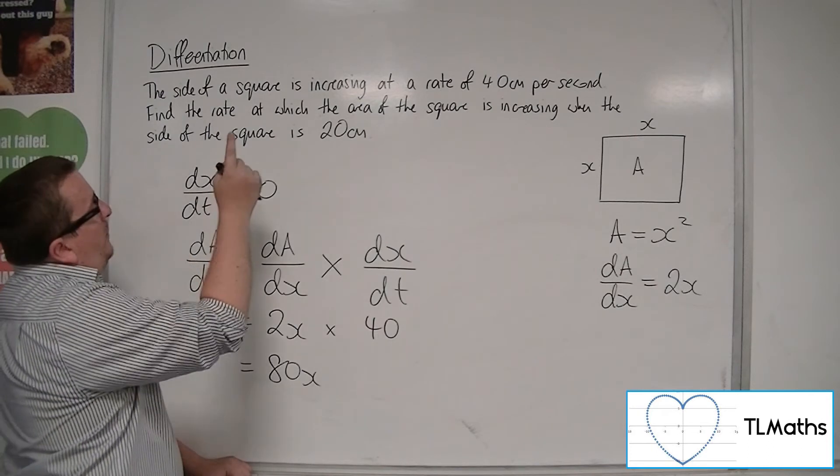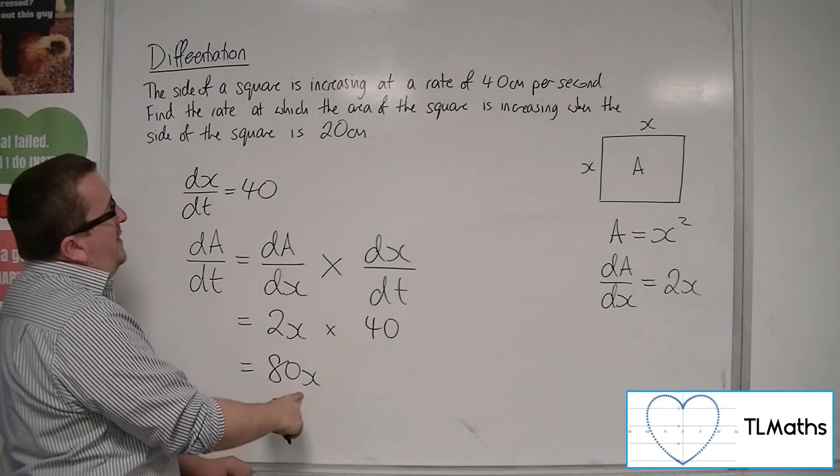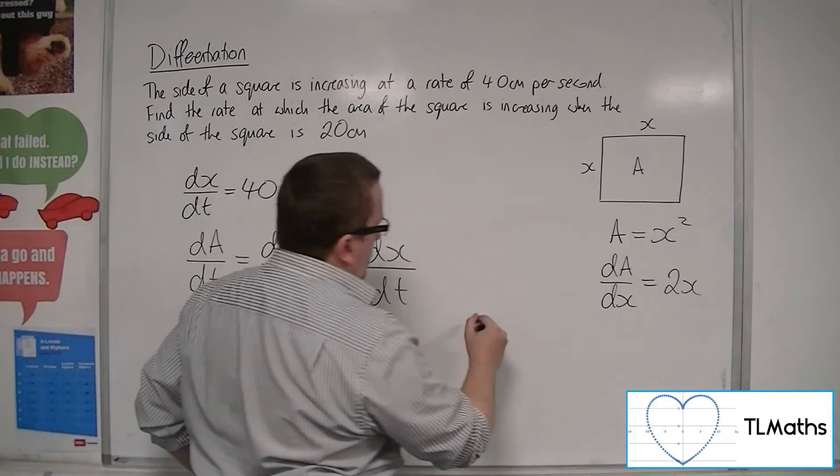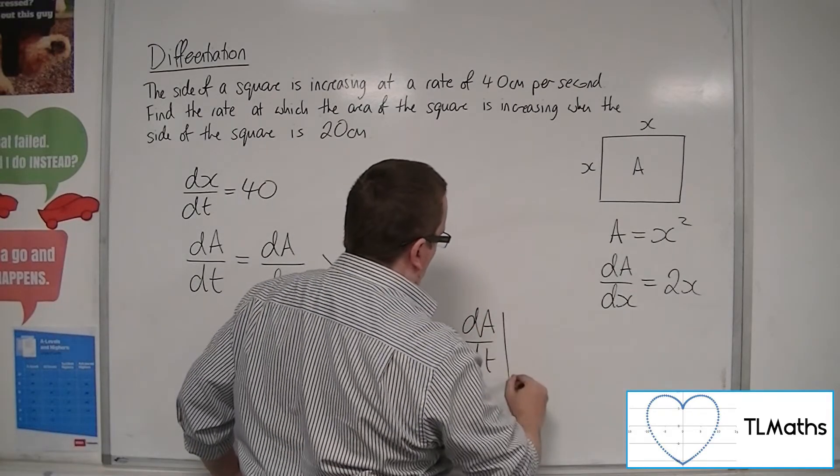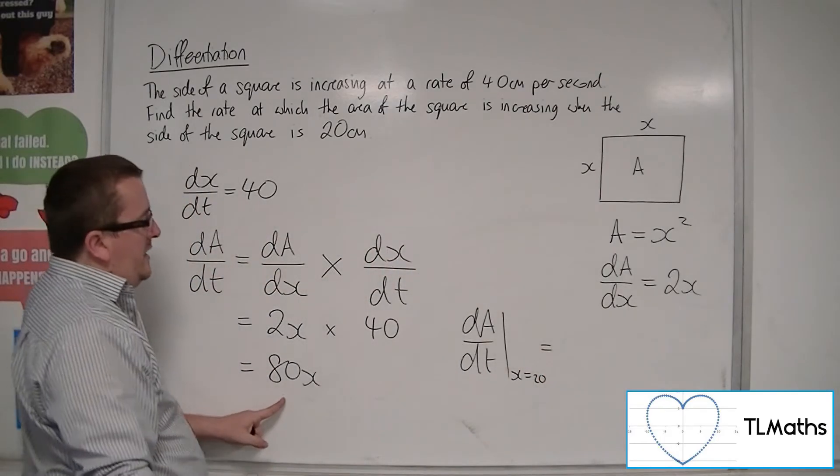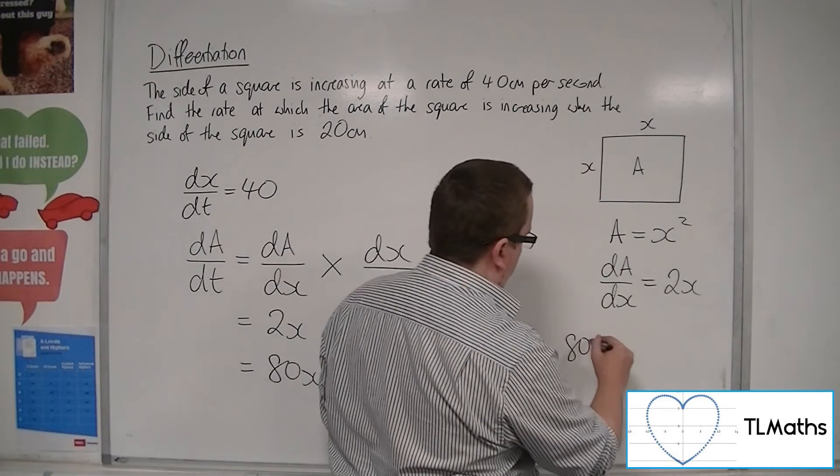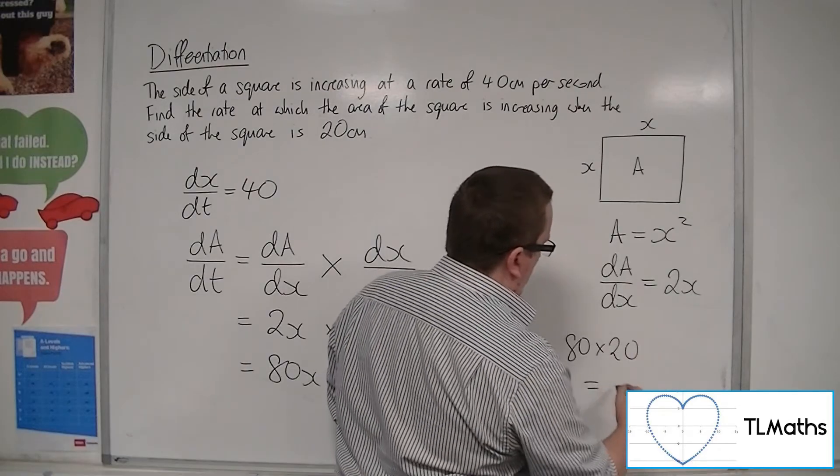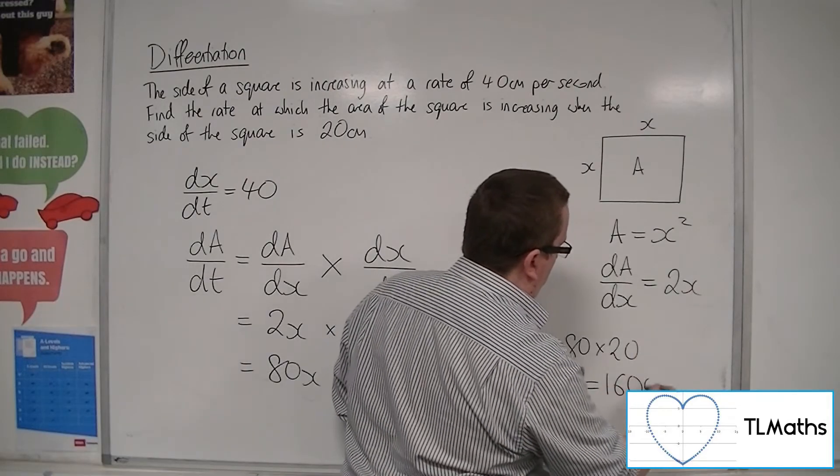I want to know it specifically when the side length is 20. So dA/dt when x is 20 is equal to 80 times 20, which is 1,600.